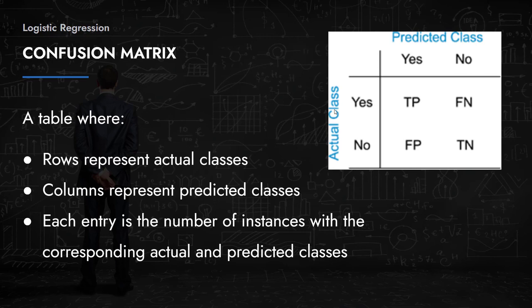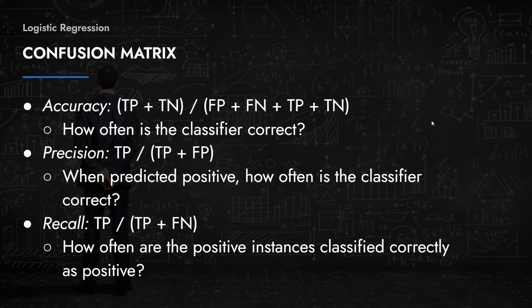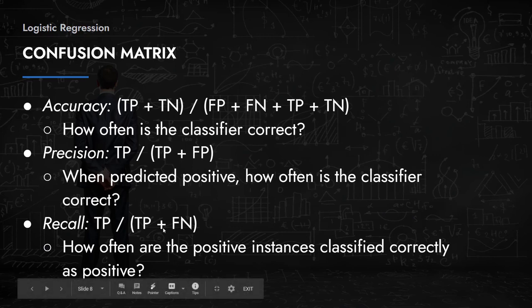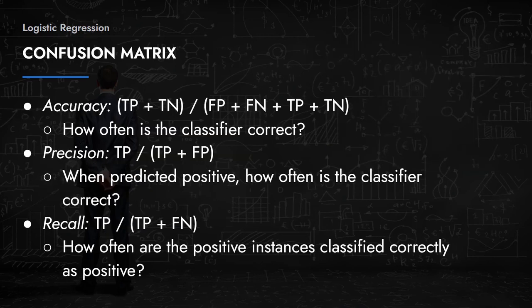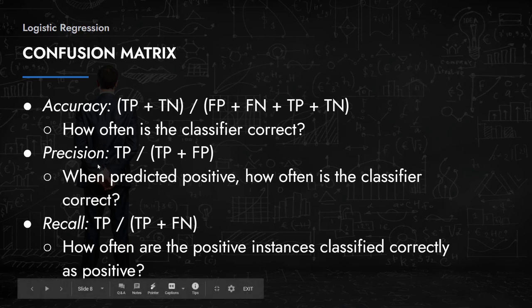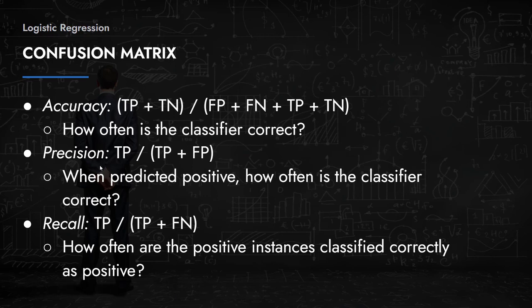For the cancer problem, we want high recall — ideally 1.0, or 100%. We don't want to ever predict that someone who actually has cancer doesn't have it, because they'd continue living their life without treatment. Take your time to really understand the confusion matrix and the difference between precision and recall, and how they correspond to different problem contexts.